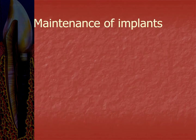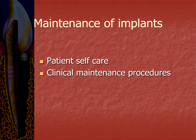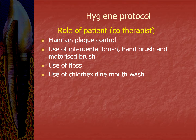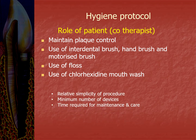Coming back to our main topic — implant maintenance. Maintenance is really important because good health of the peri-implant tissue is essential for the survival of the implant. Implant maintenance comprises two steps: patient self-care and clinical maintenance procedures. Patient self-care includes maintaining plaque control through interdental brushes, hand brushes, motorized brushes, dental floss, and chlorhexidine mouthwash. Patient compliance is a major factor and depends upon the simplicity of the procedure, minimum number of devices used, and the time required for care.